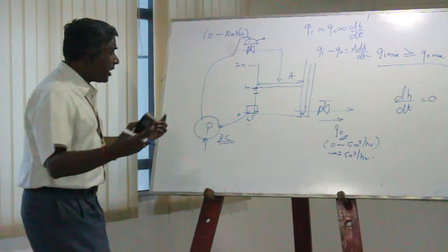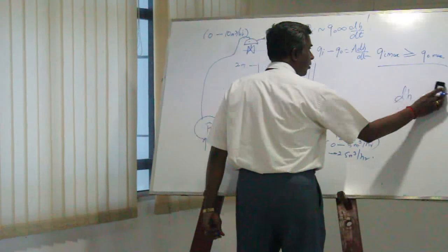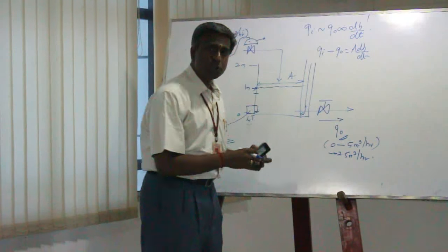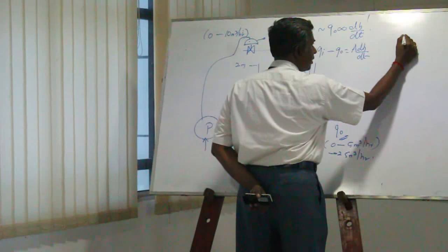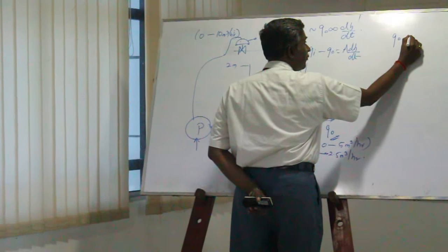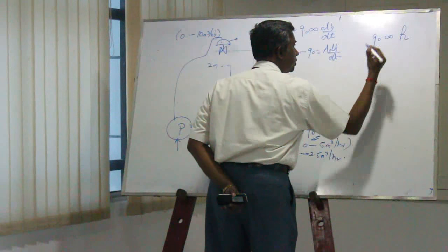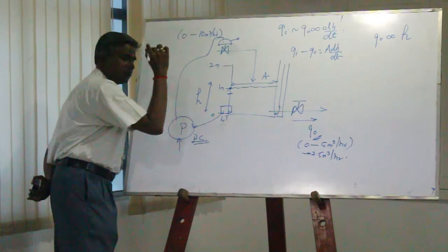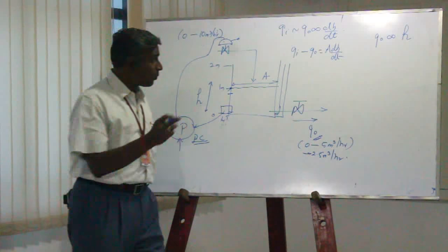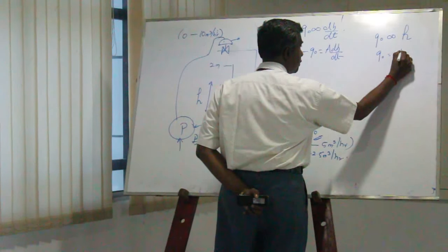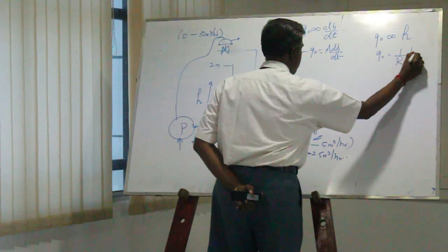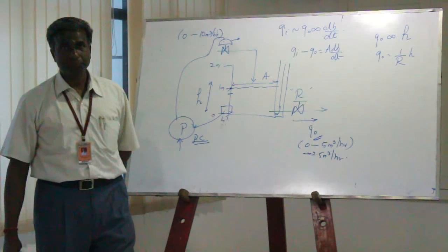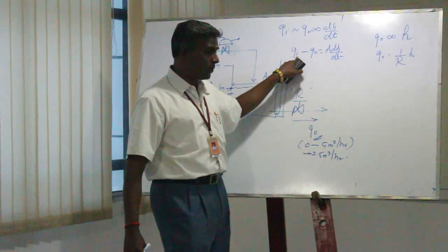This I can take as equation number one. Then I need to get a model. If I need to get a model, I will have to go for the next situation. The next situation is something else I need to define. Here I will go for q0. If you look into q0, this q0 will be proportional to h, where h is nothing but this height. So if I want to equate this, then I will say q0 is equal to 1/r times h, where r is the resistance of this particular valve.